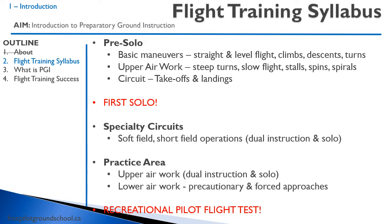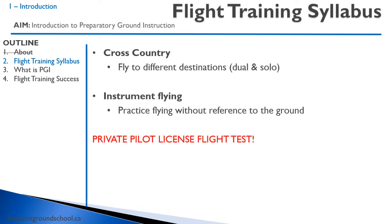The recreational pilot permit — think of it as a student pilot permit, but you're allowed to take a passenger along and you do not need to be supervised by an instructor. After you do that recreational pilot flight test, you're going to do some dual and solo cross country, learning how to navigate to different destinations, 100 miles away from where you took off. You'll also learn to practice flying under instruments, so in case you ever get stuck in cloud or fog, you don't end up a statistic. At that point, you complete your private pilot license flight test, and you are now a fully licensed pilot.